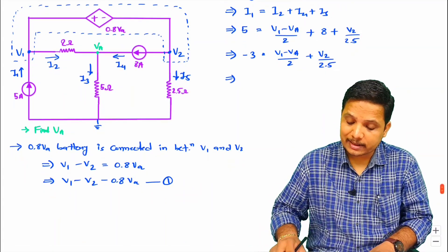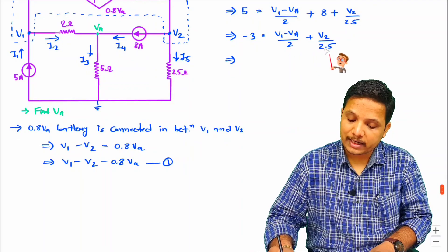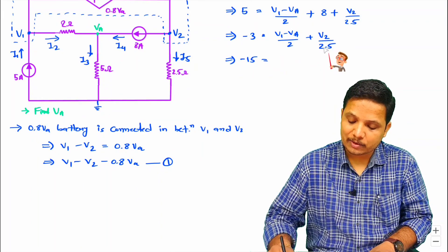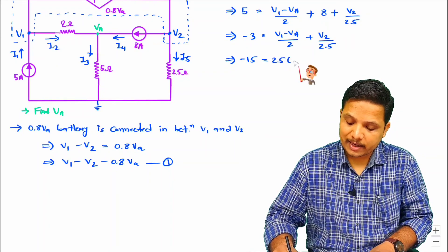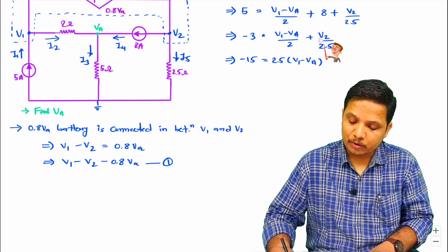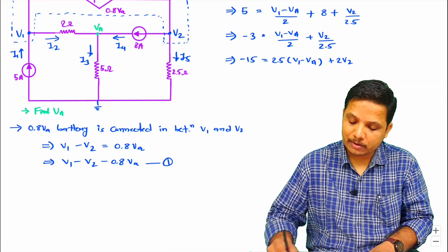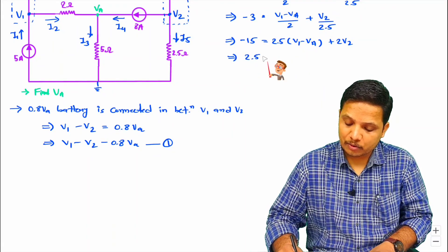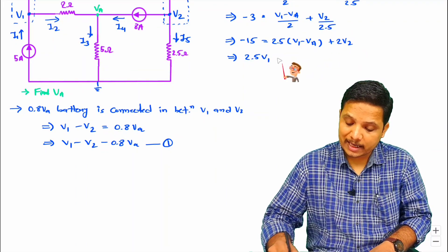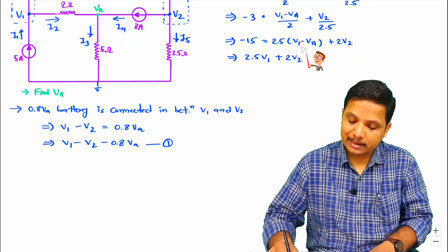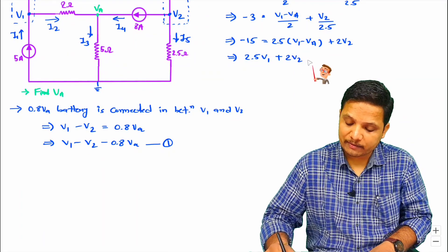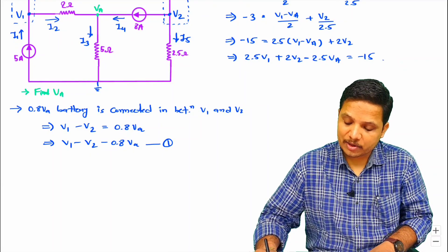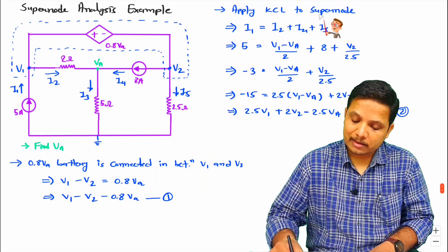Taking LCM of 2 and 2.5, which is 5, we get: 5 times minus 3 equals minus 15, so minus 15 equals 2.5(V1 minus Va) plus 2 V2. Expanding: 2.5 V1 plus 2 V2 minus 2.5 Va equals minus 15. This is equation 2, based on the supernode.